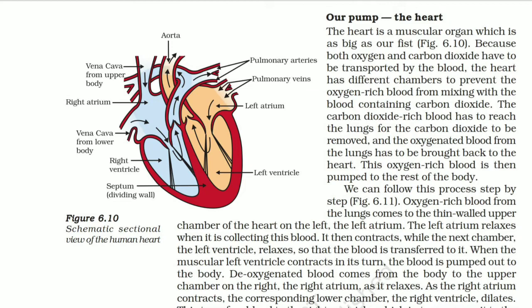Our heart is a very important organ. The size of our heart is equal to the size of our clenched fist. The human heart is divided into two parts: left and right. Each part is further divided into two parts — the upper part is known as the atrium and the lower part is known as the ventricle.